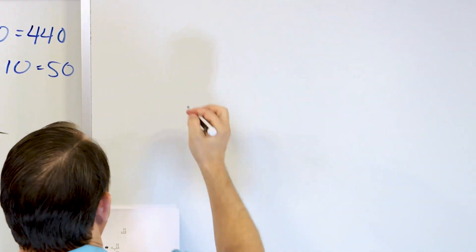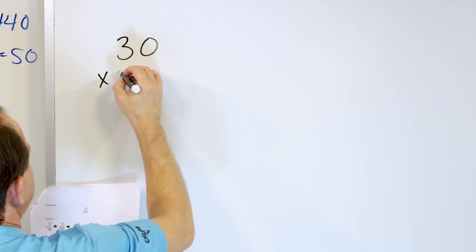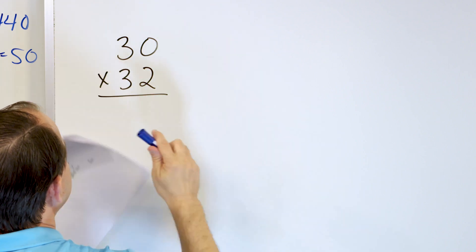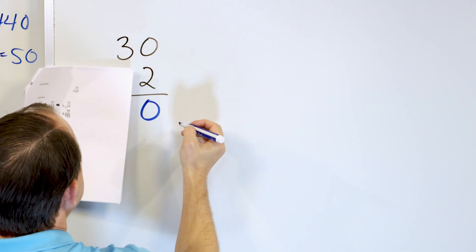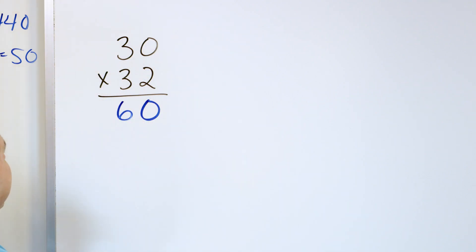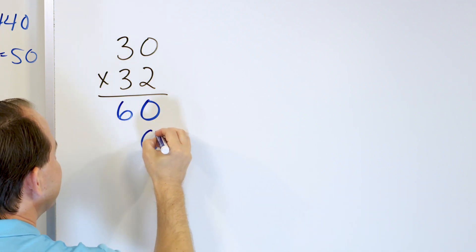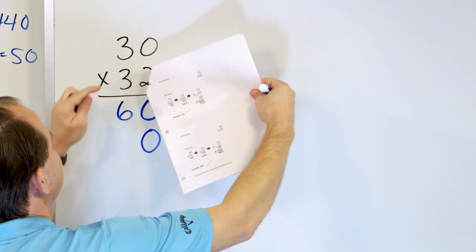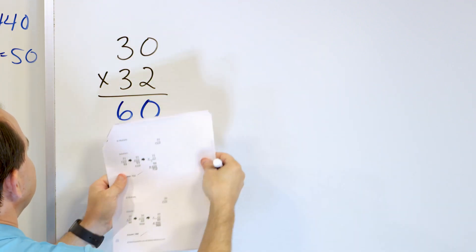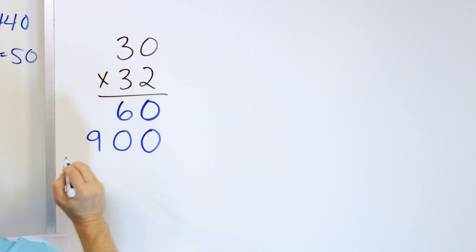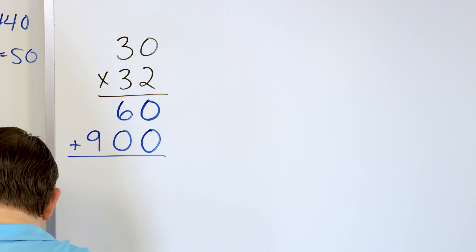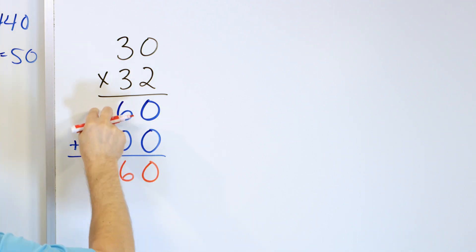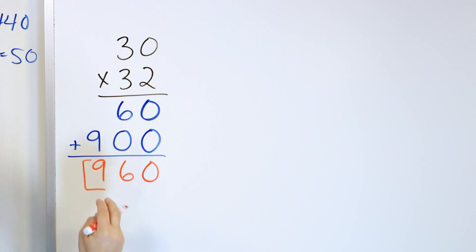Let's take a look at problem number 3: 30 times 32. What is the first step? We ignore the 3 — it's not there. 2 times 0 is 0. Then 2 times 3 is 6, and that number goes in this column. Now we need to multiply by the 3, but first we add a 0 — we do that right away every time, no matter what. Then 3 times 0 is 0, so that goes here. And 3 times 3 is 9, which goes right here. Then we add up: 0 plus 0 is 0, 6 plus 0 is 6, and 9 plus 0 is 9. The answer is 960.